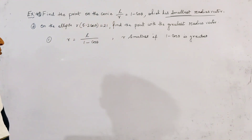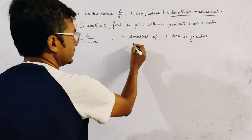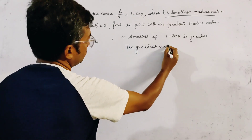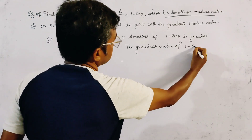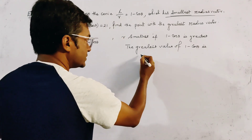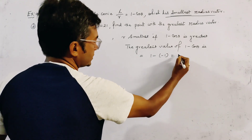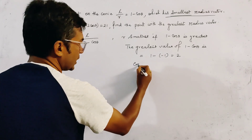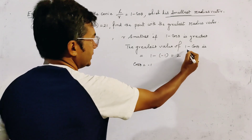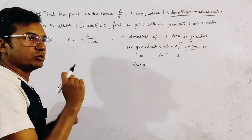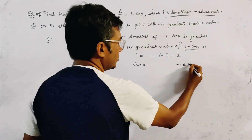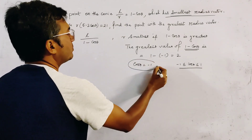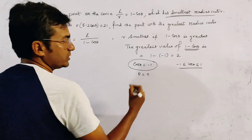Because L is constant, the greatest value of 1 - cosθ is equal to 1 - (-1) = 2. If we put cosθ = -1, then this is the greatest value of 1 - cosθ, because we know that -1 ≤ cosθ ≤ 1. For this value of cosθ, we must have θ = π.